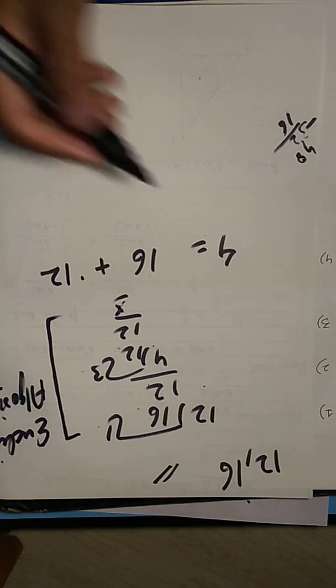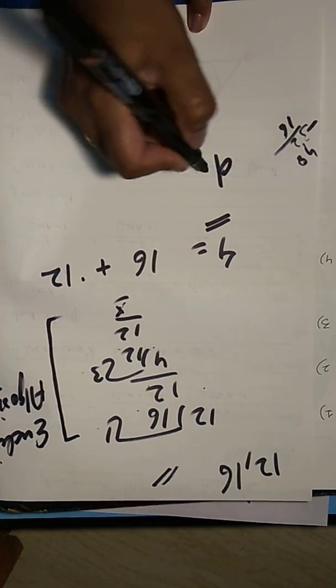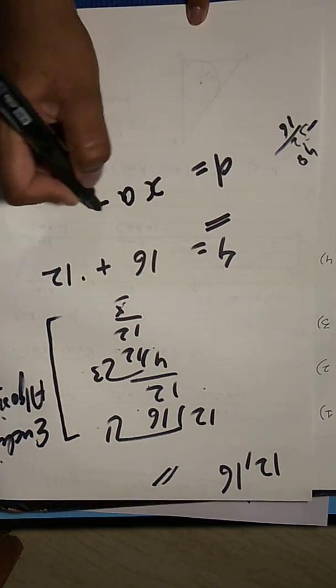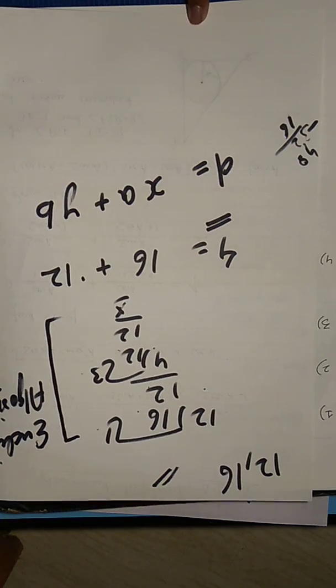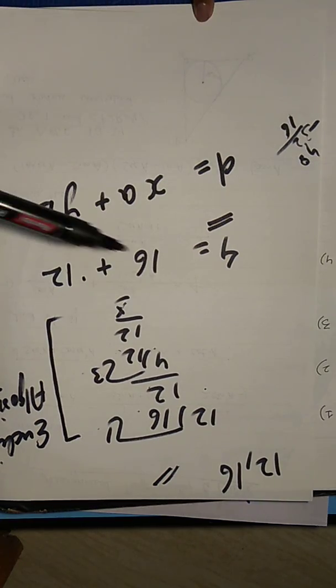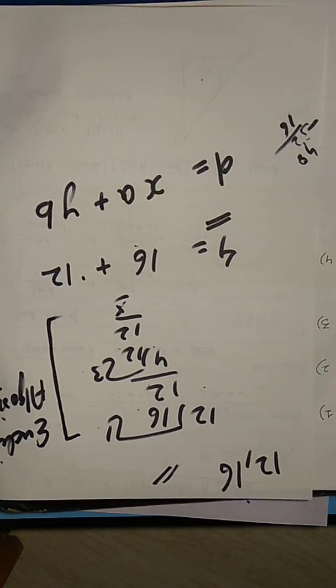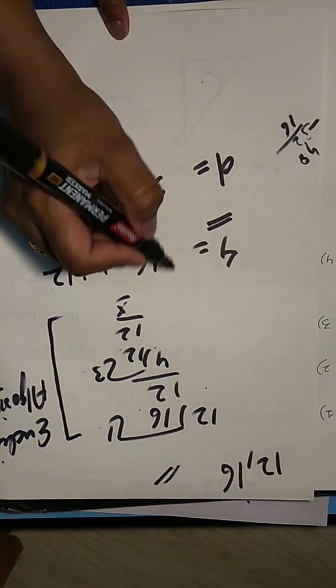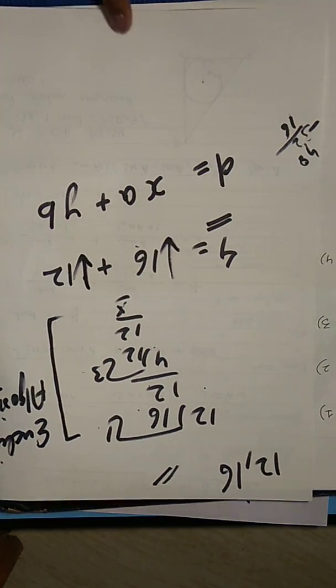Now what am I going to do? 4, the HCF, is equal to X into A plus Y into B. 4 equals to 16X plus 12Y. But 16 and 12 will have constants. They will be positive and negative. We will find the constants.